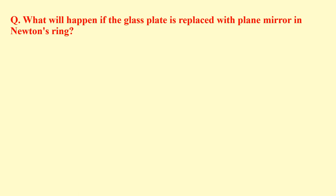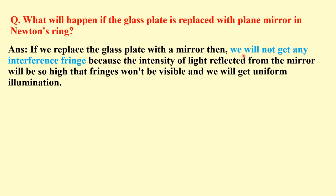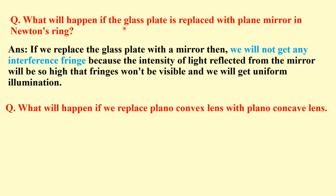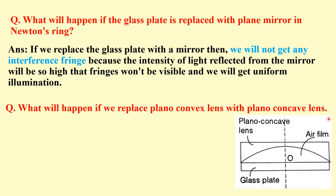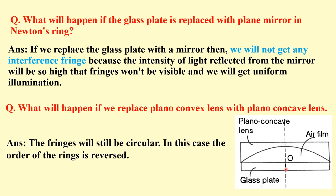What will happen if the glass plate is replaced with a plane mirror in the Newton's ring setup? If we replace the glass plate with a mirror, we will get uniform illumination — no interference pattern will be observed. When the plano-convex lens is used, the thickness is highest at the edges and zero at the point of contact. The fringes will also be circular, but replacing with a mirror removes the conditions needed for the interference pattern.